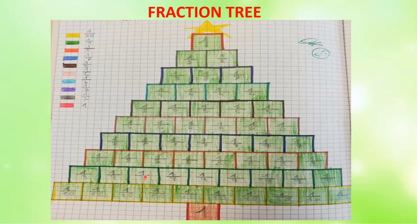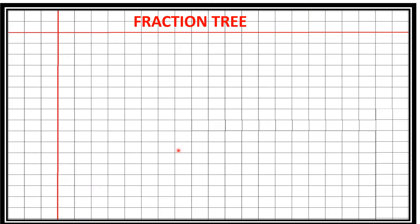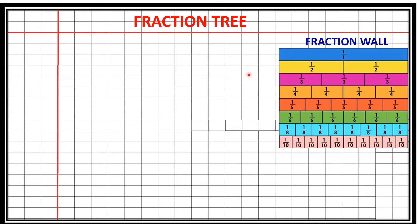Now we will see the same fraction tree activity in a different way. This activity will help the child understand the concept of fractions differently. This is a fraction wall — hope you are all aware of this. The blue complete one whole, 1/1, is divided into two equal parts: half and half.